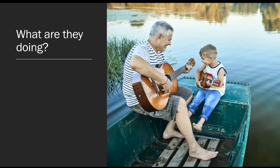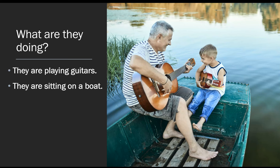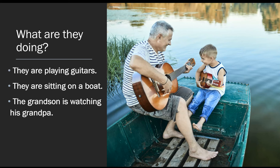They are playing guitars. They are sitting on a boat. The grandson is watching his grandpa — that means the little boy is looking at the grandpa's hands on the guitar. They are not wearing shoes. Remember, with clothes that is always present continuous. So: they are not wearing shoes, or the boy is wearing blue jeans, and grandpa is wearing a black and white shirt. Everything there is present continuous because they're using it right now.